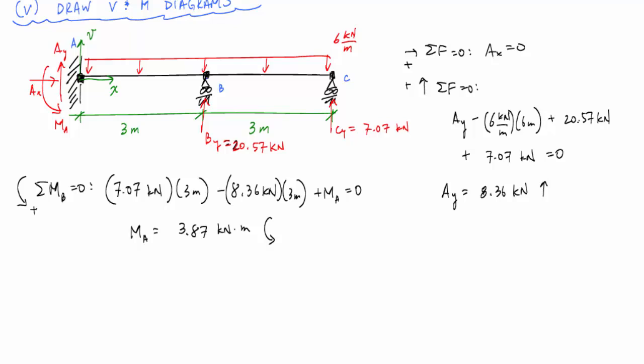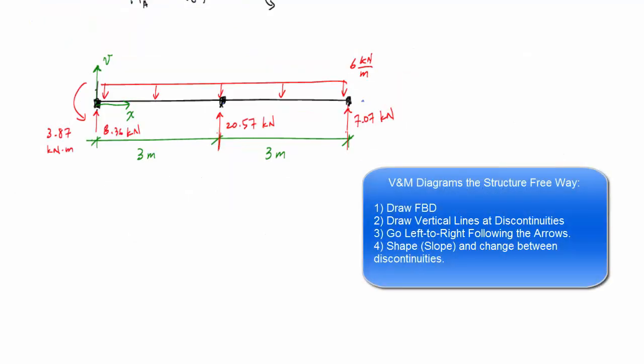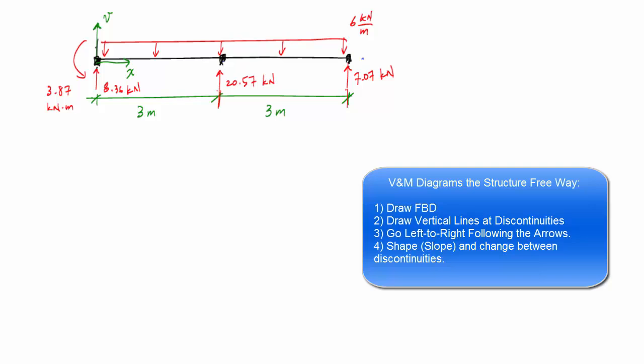And now I'm going to draw my free body diagram one last time so I can draw my shear and moment diagrams in a nice clean way. So here's my free body diagram. I'm going to start the process. Vertical lines at discontinuities. My shear diagram first, going left to right, remembering that dV/dx is equal to the value of the distributed load.